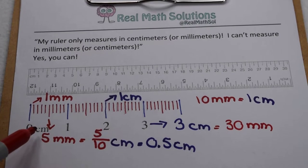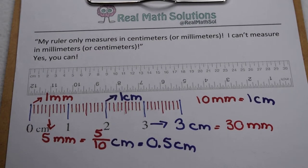So yes, no matter what's written on your ruler by the zero, it does still measure centimeters and millimeters.